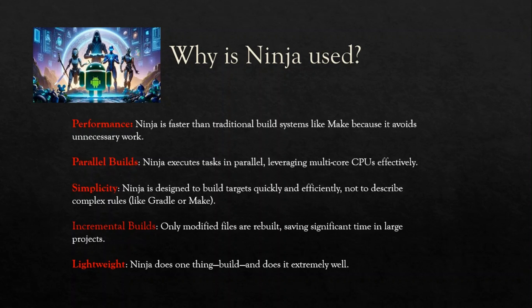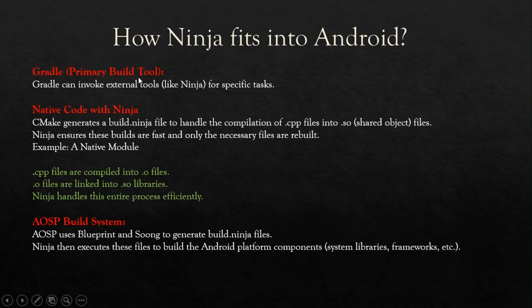Think about it — if you make a small change and there are a thousand files in your project, imagine the time it takes to compile all thousand files. Ninja just compiles and rebuilds only the modified files, which definitely saves significant time in large projects. Also, Ninja is very lightweight — it does only one thing: build. And it does it perfectly and extremely well. Because of all these advantages, Ninja is used in Android to handle thousands of files quickly and efficiently.